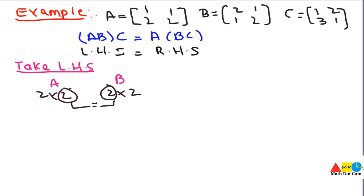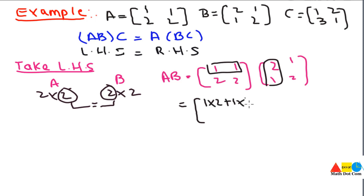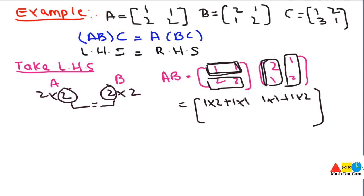So we will multiply them: AB equals A = [1,2; 1,2] and B = [2,1; 1,2]. We will use the method of dot product, multiplying each row with each column. Row 1 with column 1: 1×2 + 1×1. Row 1 with column 2: 1×1 + 1×2. Row 2 with column 1: 2×2 + 2×1. Row 2 with column 2: 2×1 + 2×2.